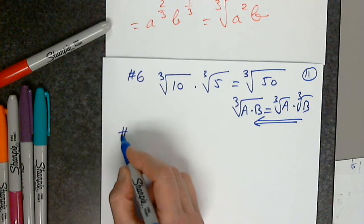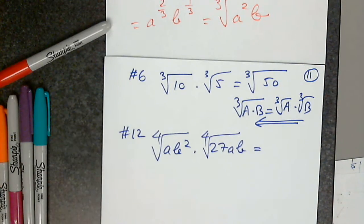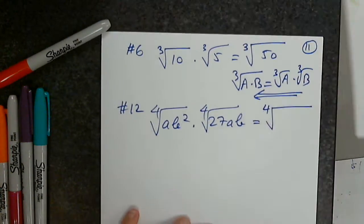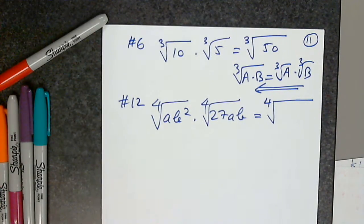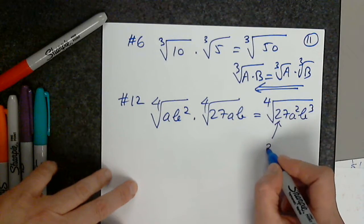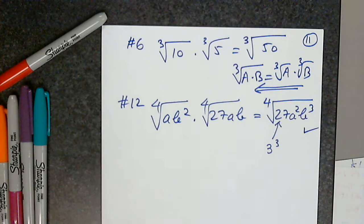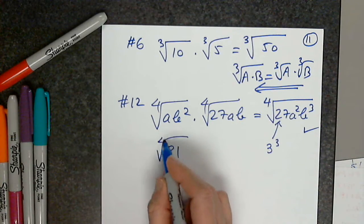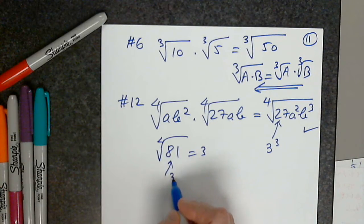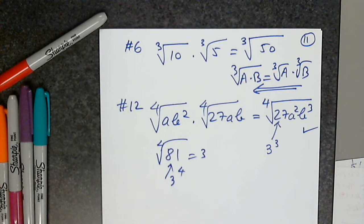Problem 12: the fourth root of ab squared multiplied by the fourth root of 27ab — same index, so multiply. The radicand becomes 27a squared b cubed to the fourth root. The power is less than the index in each factor, so this is fully simplified. Note that 27 is 3 to the third; if it were 81 — which is 3 to the fourth — I could take the fourth root and get 3, but 27 cannot be simplified further.